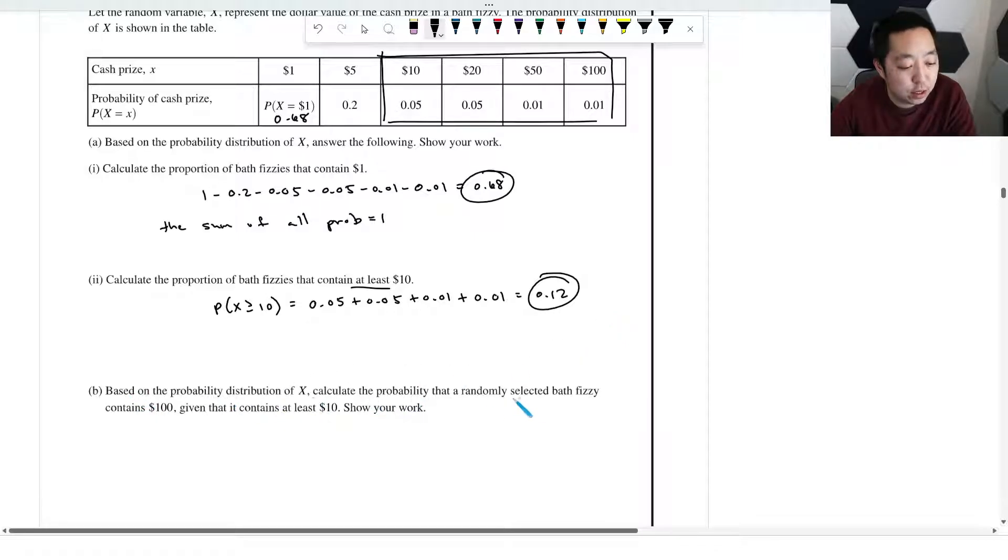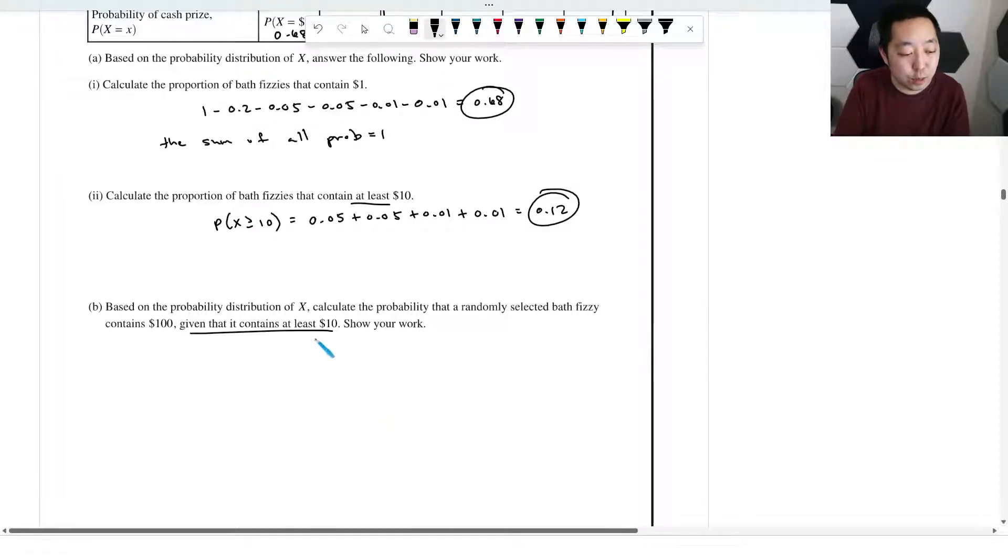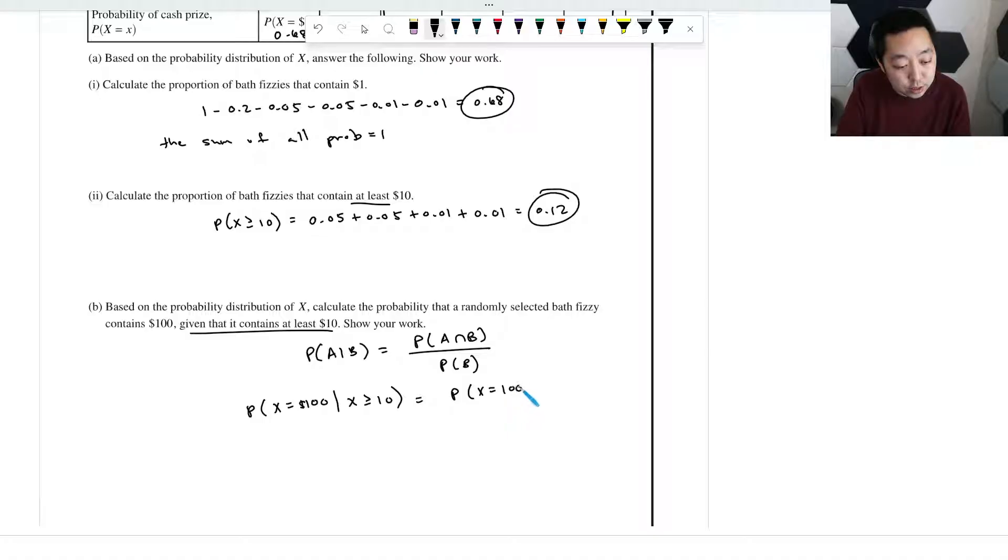Based on the probability distribution of x, calculate the probability that a randomly selected bath fizzy contains $100 given that it contains at least $10. So when you do conditional probability, the notation is the probability of A given B is the probability of A and B divided by the probability of B. So in this case, that's the probability that x equals 100 assuming that x is greater than or equal to 10, which would be the probability that both x is equal to 100 and x is greater than or equal to 10, divided by the probability that x is greater than or equal to 10. This is like when I did a much more difficult probability analysis class in college, this kind of stuff is what got me through.